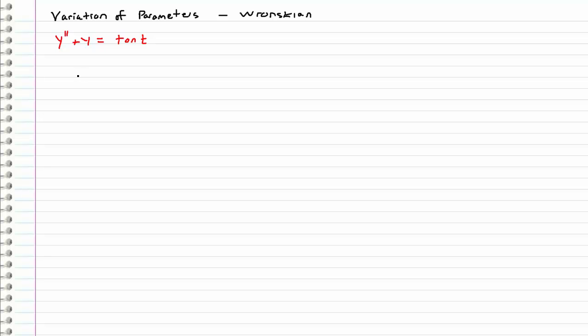So in the last videos I showed you this really tedious process of determining u1 and u2, but instead now we're going to look at how to do that using the Wronskian.